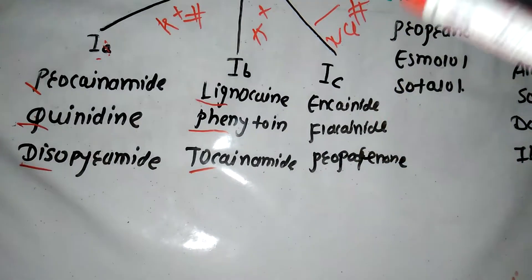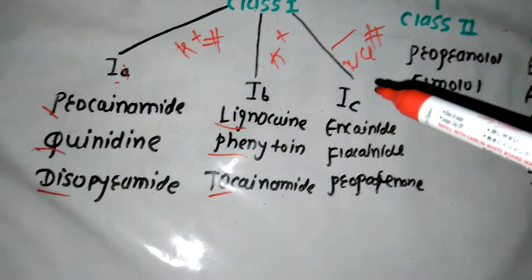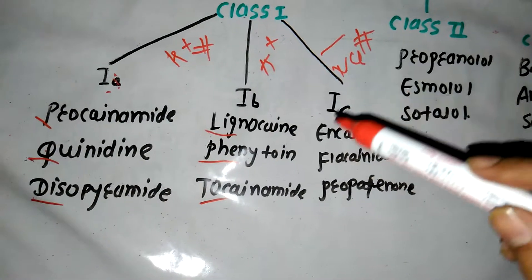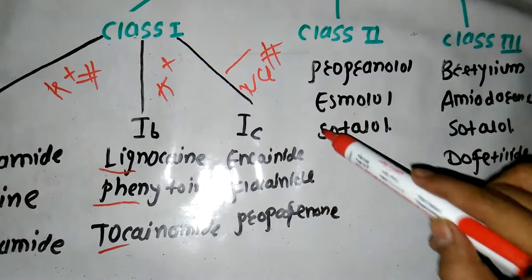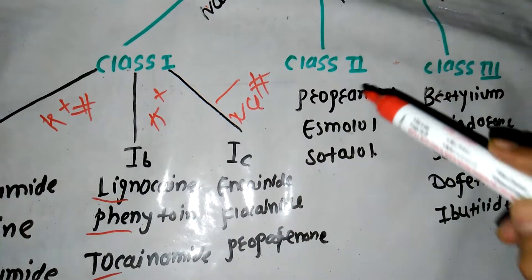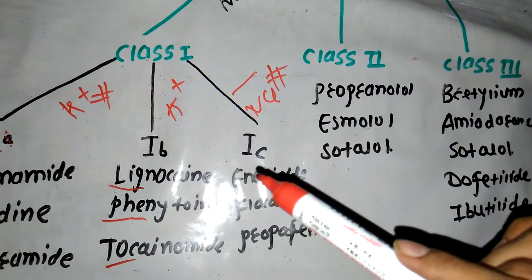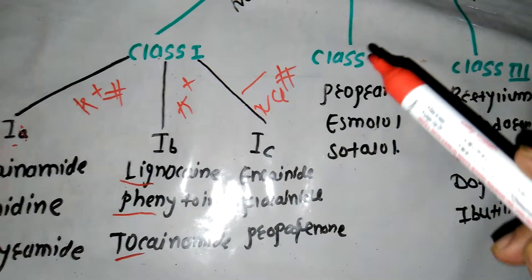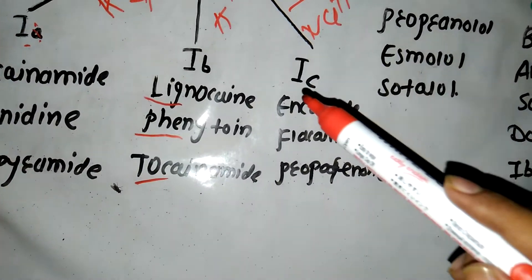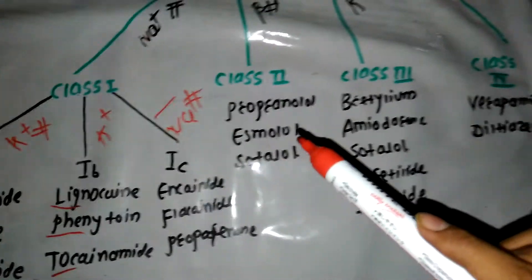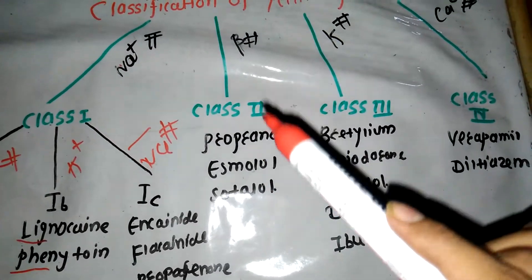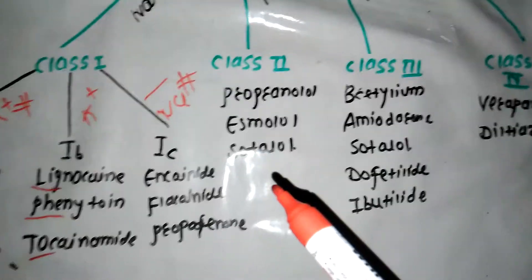The mnemonic continues - the money was spent at the hotels, and then it went to Class 2. P-E-S means paisa, money went from Class 1 to Class 2. In Class 2, we have propranolol, esmolol, and sotalol.